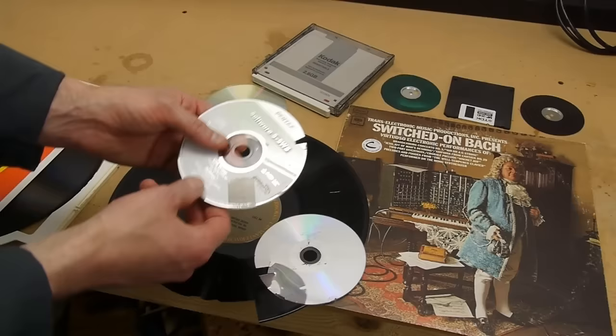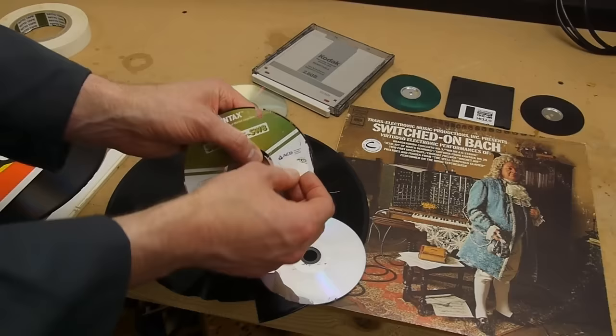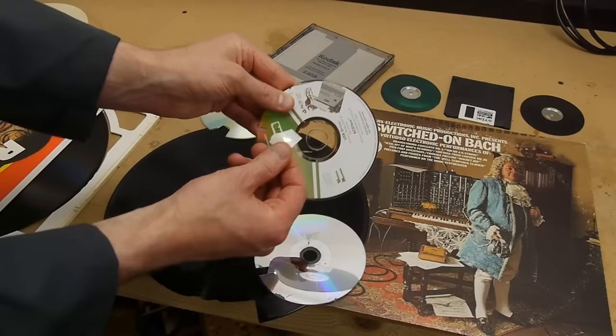I tried a bunch of other things, and then I found out the thing that works best is just double stick tape. Just get some really strong double stick tape and stick it down to the top of the disc and pull it off.